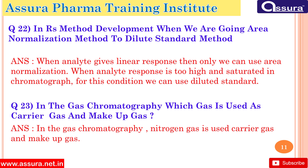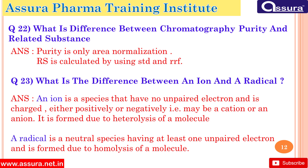In gas chromatography, nitrogen gas is used as both the carrier gas and the makeup gas. What is the difference between chromatography purity and related substances? Purity is calculated by area normalization only, whereas related substances (RS) are calculated using a standard and reference.